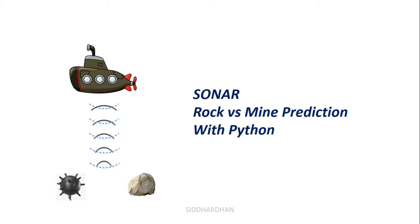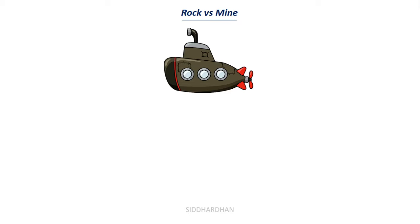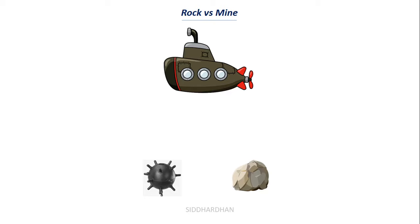First let's understand more about this use case. Consider there is a submarine — there is a war going on between two countries. The submarine is going underwater to another country, and the enemy country has planted some mines in the ocean. Mines are explosives that explode when an object comes in contact with them. There can also be rocks in the ocean, so the submarine needs to predict whether it is crossing a mine or a rock. The submarine sends a sonar signal — sonar sends sound signals and receives them back, and this signal is then processed to detect whether the object is a mine or just a rock.